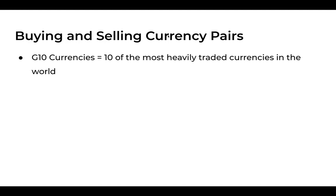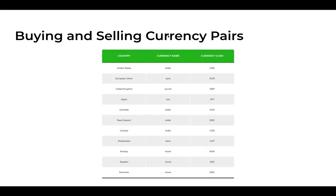We also have the G10 currencies — the 10 most heavily traded currencies in the world: the US dollar, euro, pound, yen, Australian dollar, New Zealand dollar, Canadian dollar, Swiss franc, Norwegian krone, Swedish krona, and Danish krone. You can write these down if needed, though it's not strictly necessary right now.